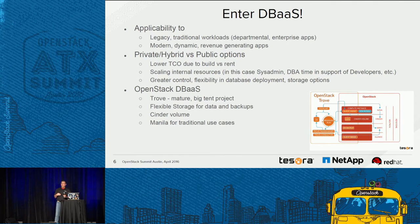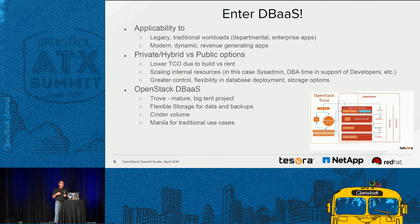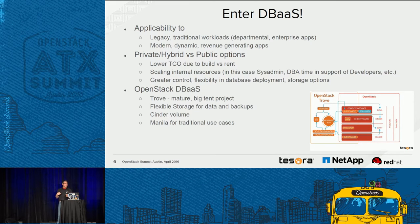OpenStack DBaaS — specifically the Trove project — is a maturing big tent project. It's going to provide flexible storage options for database creation, stand-up and burn-down, for backups, and for the various needs traditionally serviced by a DBA. Storage options on the back end are somewhat limited right now but growing all the time — especially for the mode one enterprise use cases when DBaaS and Manila are integrated.